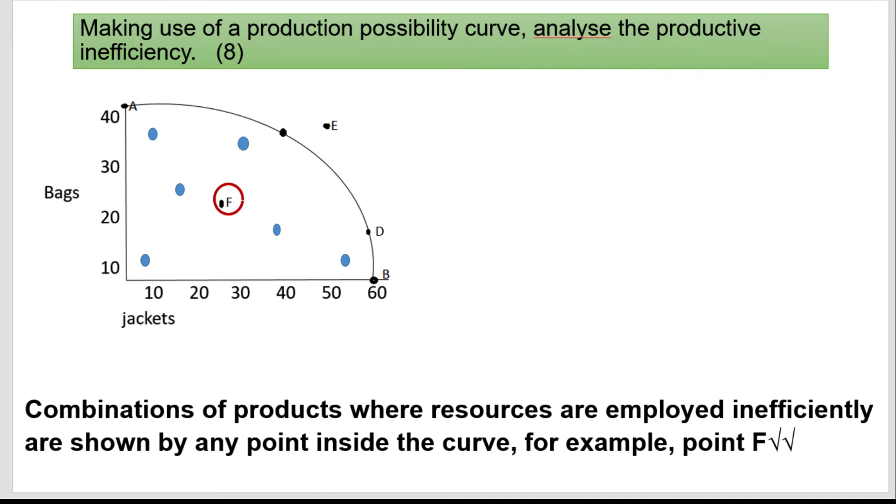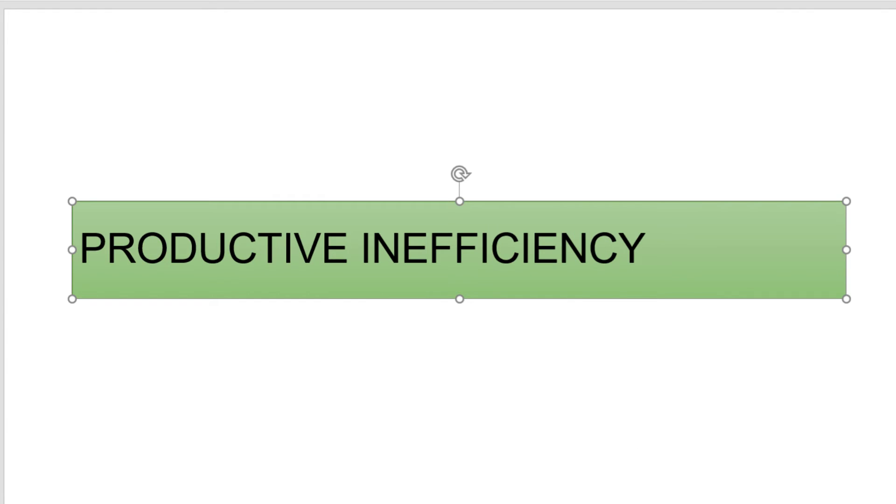What causes productive inefficiency? Various factors can lead to productive inefficiency. These include: one, outdated technology. Using technology that is too old or outdated can seriously reduce productivity.